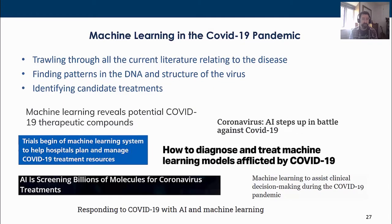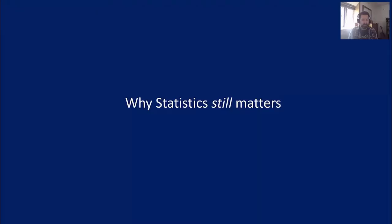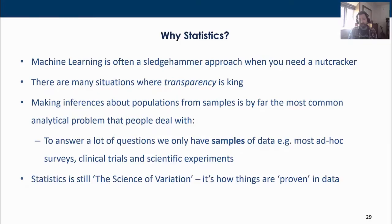If you look at the role of machine learning in the COVID-19 pandemic, it's being used very much in a discovery mode — trawling through current literature relating to the disease, finding patterns in DNA and the structure of the virus, identifying candidate treatments, and discovering relationships that classical statistics is less well-suited to find.